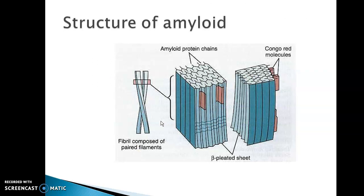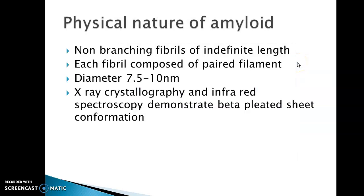The structure of Amyloid is a fibril composed of paired filaments of beta pleated sheets, and within this there are sites for Congo red molecules to bind. They are non-branching fibrils of indefinite length. Each fibril is composed of a paired filament with a diameter of 7.5 to 10 nanometers. On X-ray crystallography and infrared spectroscopy, it demonstrates beta pleated sheet conformation.